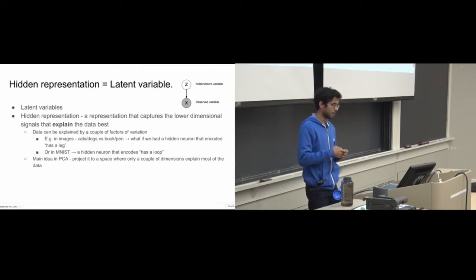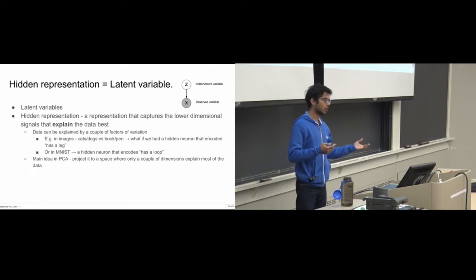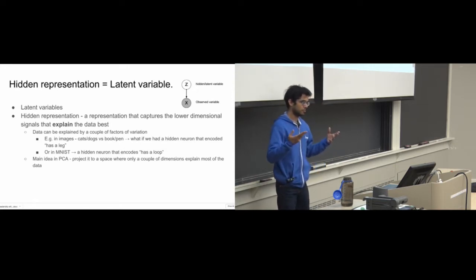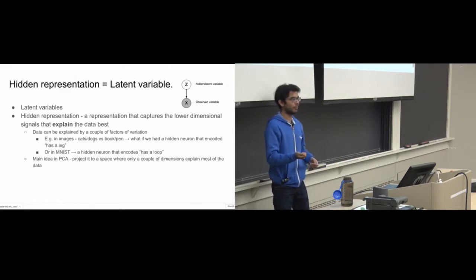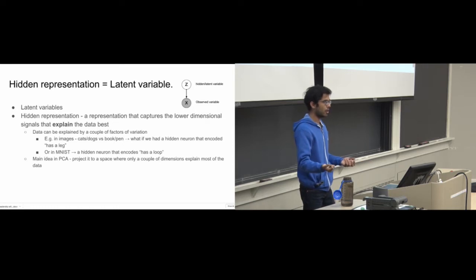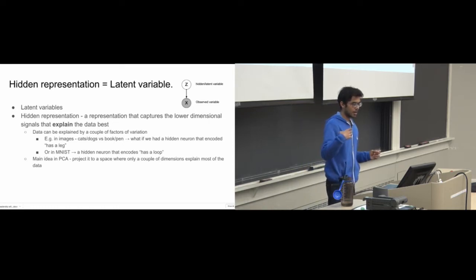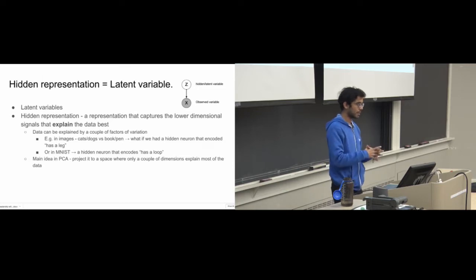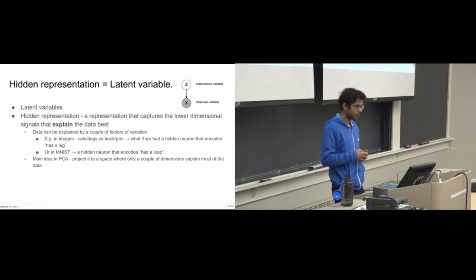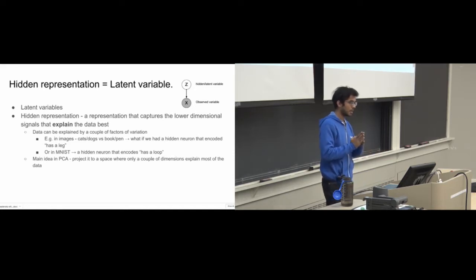For example, imagine autoencoding cats and dogs versus books and pens. There might be one hidden neuron capturing whether something has a leg or a face — that neuron would be on for cats and dogs, but off for a book or pen. These latent variables hopefully capture all the semantic information needed to regenerate your input. This is also the main idea in PCA — projecting into a space that explains most of the variance in the data.